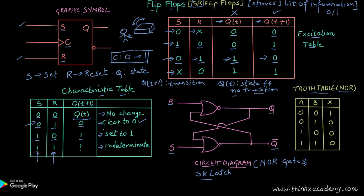Let's input S as zero and R as one into the SR latch. When reset is one and goes into the NOR gate, the second input does not matter — whether it is zero or one, the output will be zero. So the value of Q will be equal to zero.